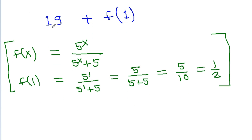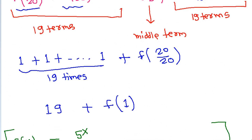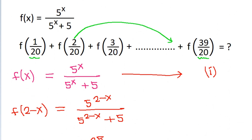So the final answer is 19 + f(1) = 19 + 1/2 = 39/2.